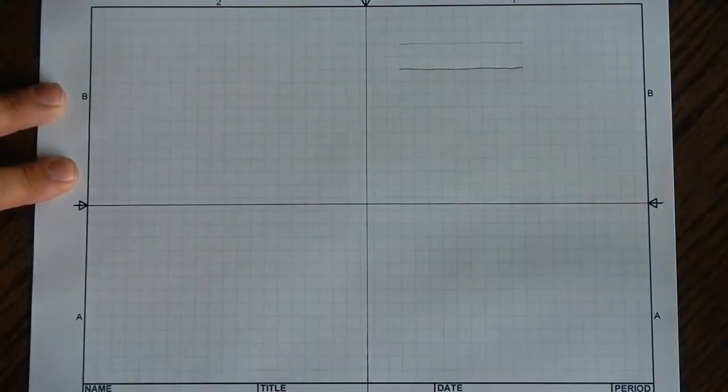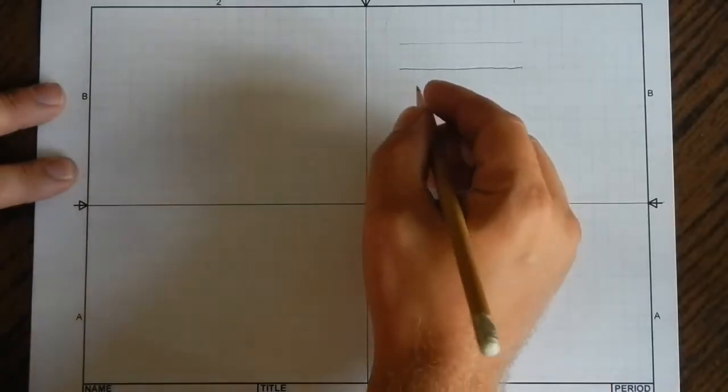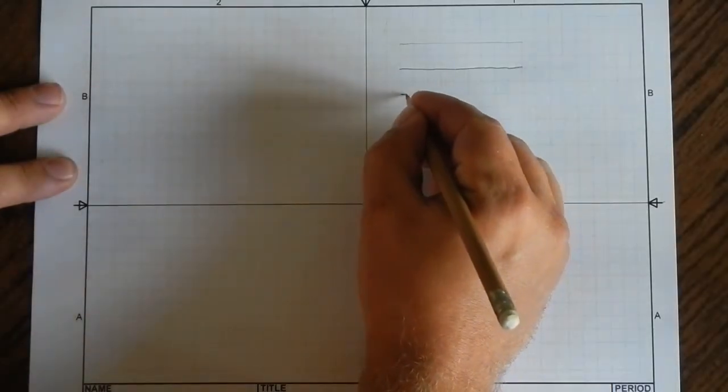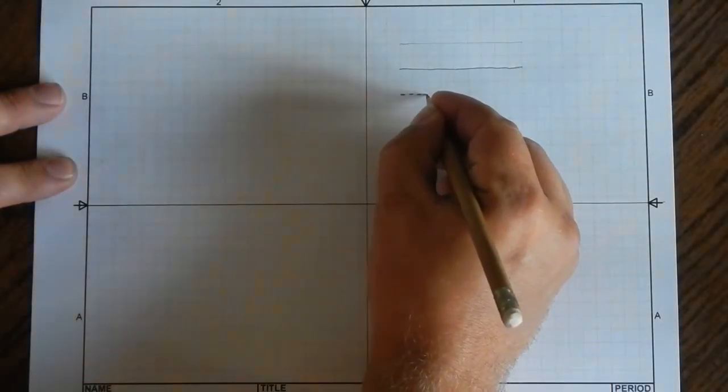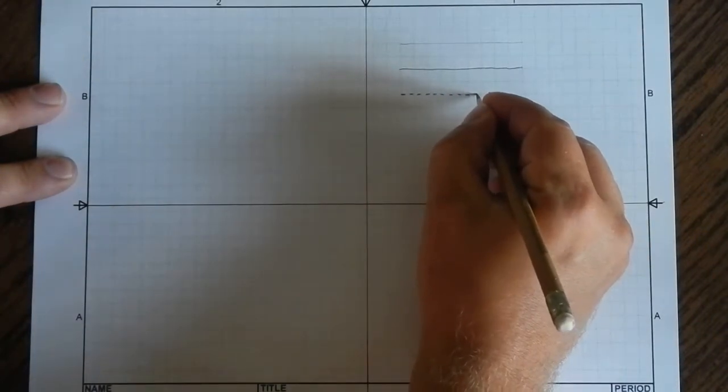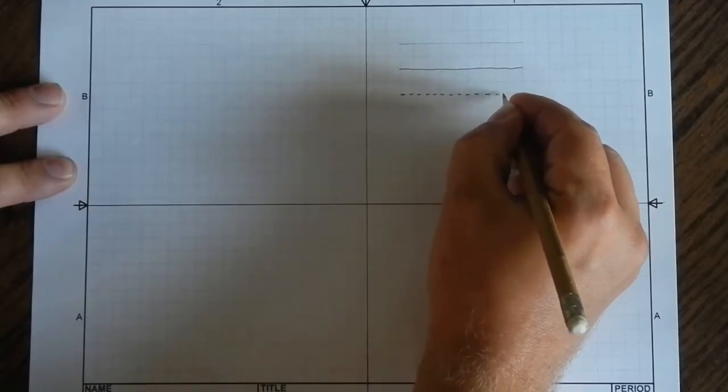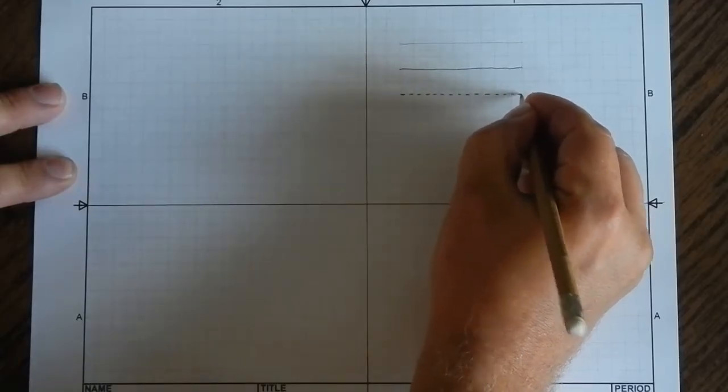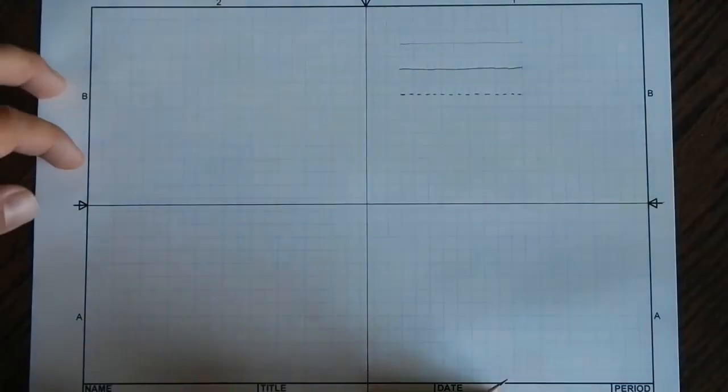The next type of line is going to be a hidden line. For hidden lines, I'm just going to draw a series of dashed lines. Hidden lines are typically used when there is something that we know is there, but it is not directly visible in our view.